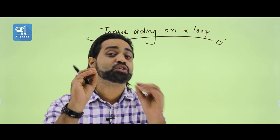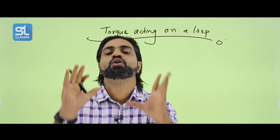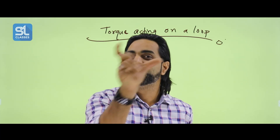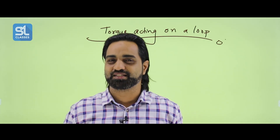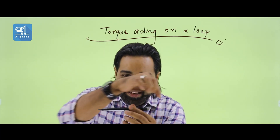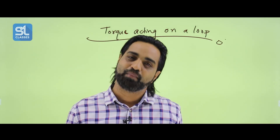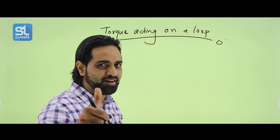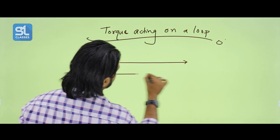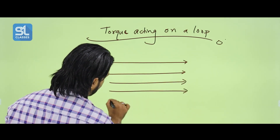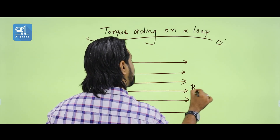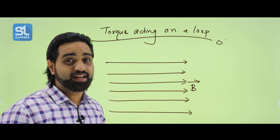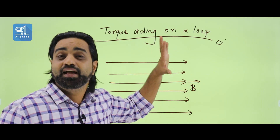Torque is calculated by multiplying the force by the perpendicular distance between the two forces. To calculate torque, you need the force and the perpendicular distance between the forces. Now let us look at torque on a loop. We represent a uniform magnetic field B using magnetic field lines.